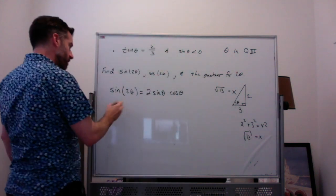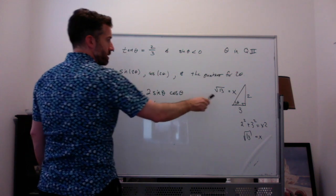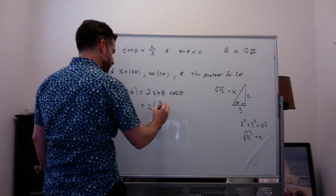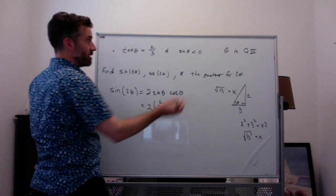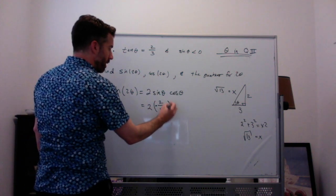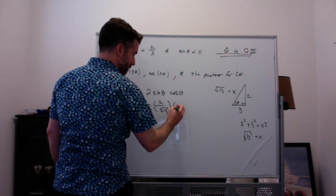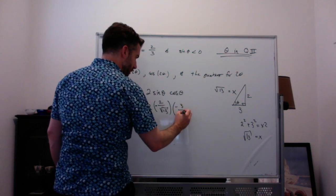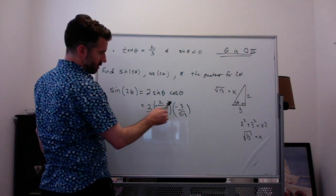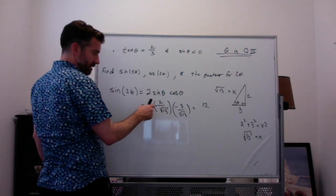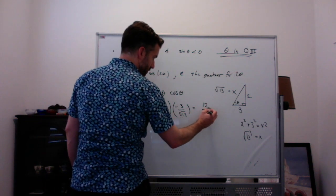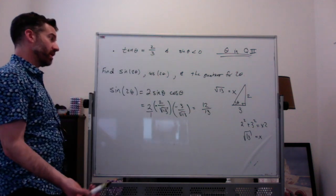Sine of 2 theta is going to equal 2 times sine of theta. Sine of theta is opposite over hypotenuse, so it's 2 over root 13, except negative because we're in quadrant 3 where sine and cosine are both negative. And cosine is negative 3 over root 13. Multiplying the tops: 2 times 2 times 3 is 12, and this is positive because negative times negative is positive. The denominator is root 13 times root 13, which is 13. So sine of 2 theta is 12 over 13.